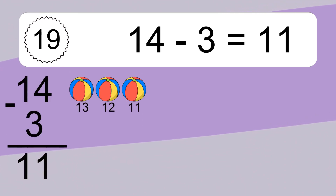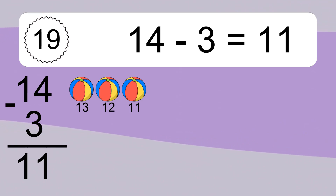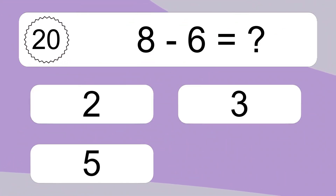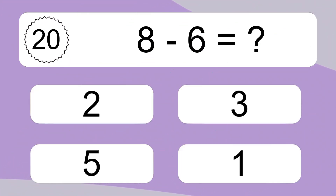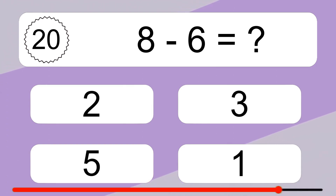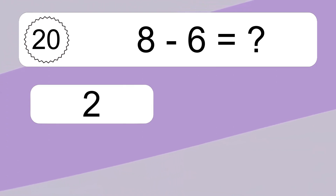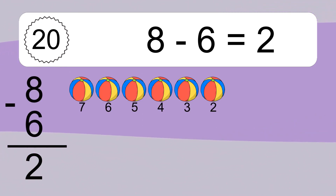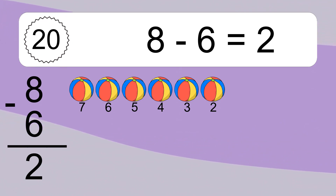14 minus 3 equals what? 14 minus 3 equals 11. Let's count it. 13, 12, 11. 8 minus 6 equals what? 8 minus 6 equals 2. Let's count it. 7, 6, 5, 4, 3, 2.